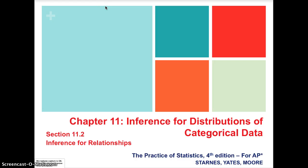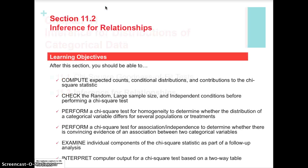Welcome back AP Statistics students. We're going to talk about section 2 of chapter 11. We're still talking about inference for categorical data, but we have moved on from the chi-square goodness of fit test to some other types of chi-square tests — specifically homogeneity and independence.